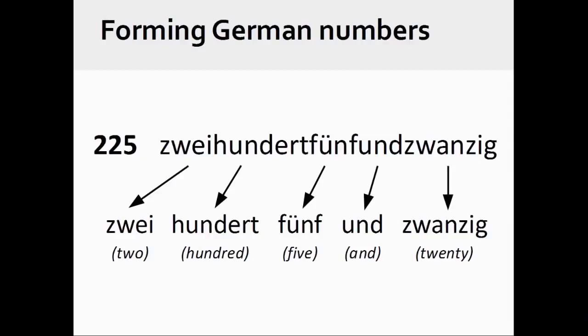Forming numbers over 100 is a simple process. Let's take a look at the number 225. In English, we form the number through a combination of two numbers, placing the larger number before the smaller number, 200 and 25. The last component of the number, as explained earlier, also places the larger number before the smaller number, 20 and 5.